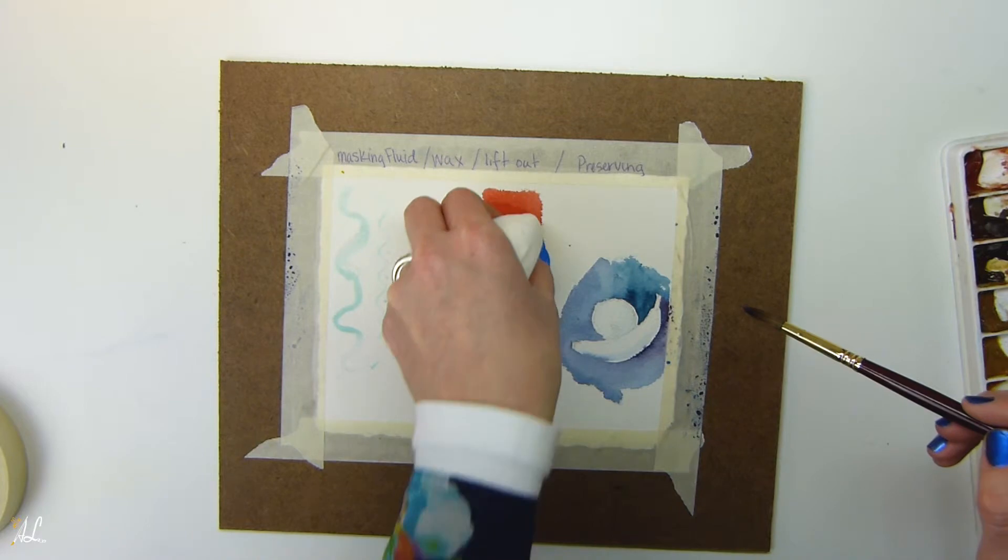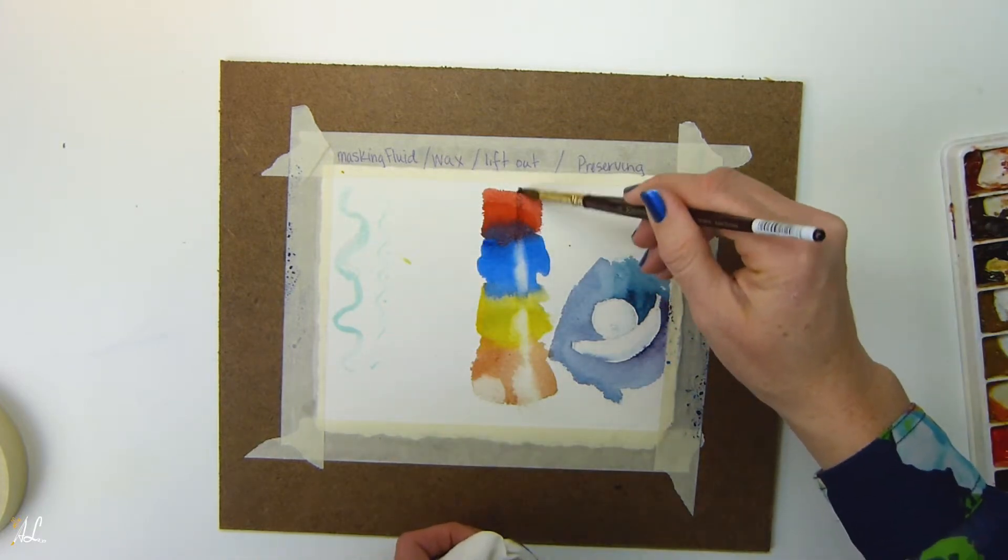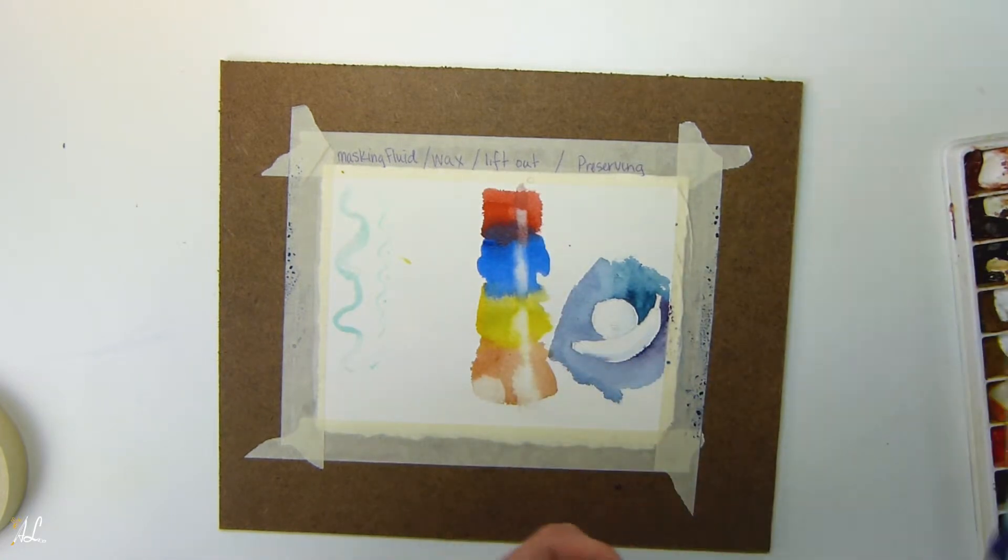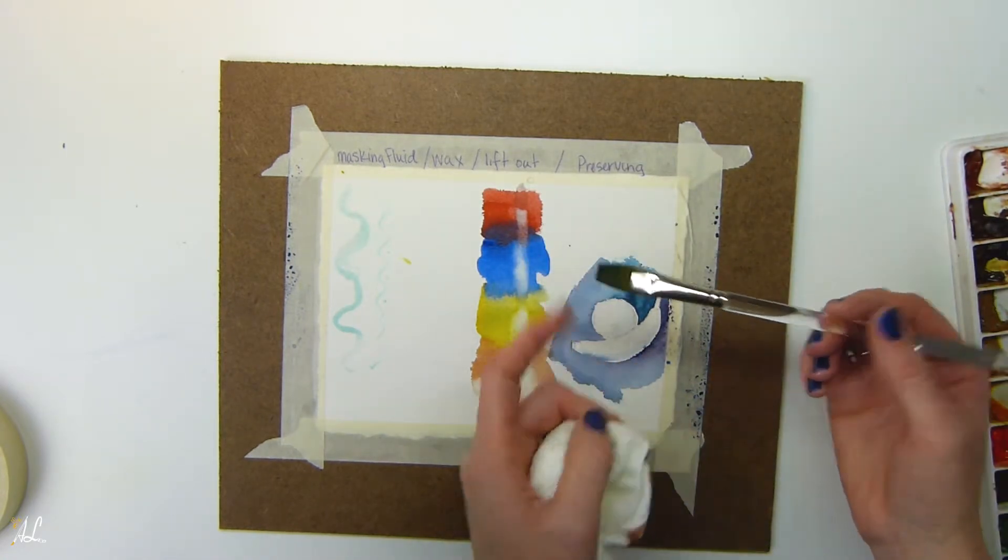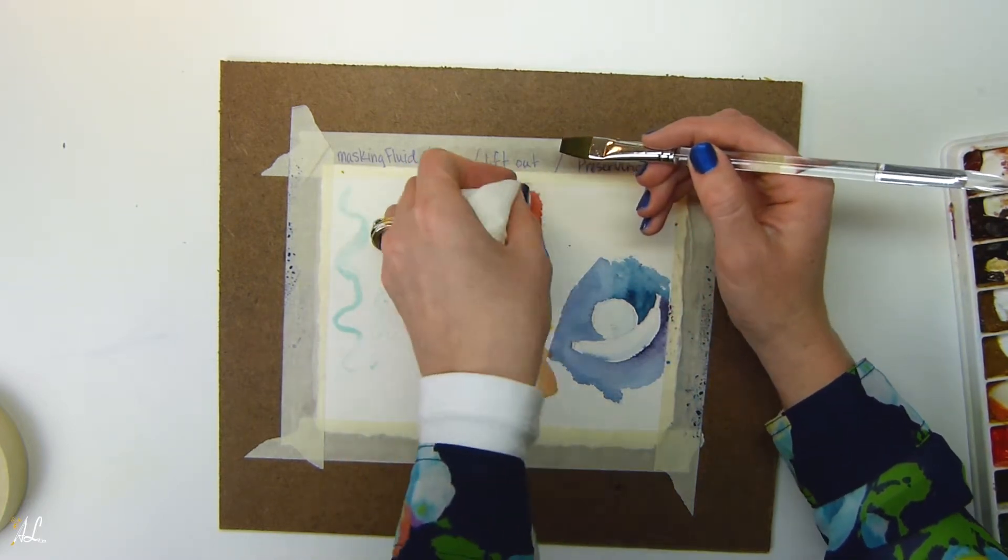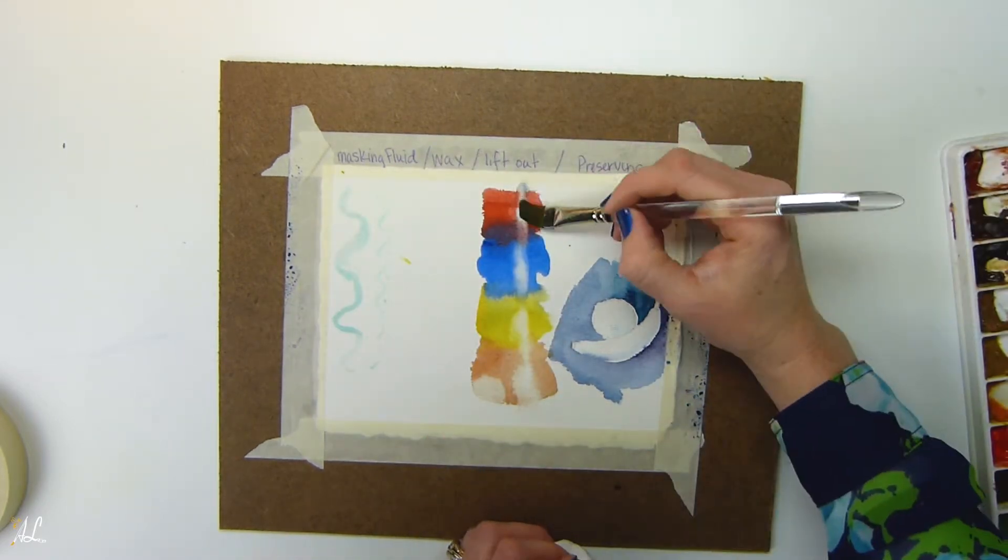I usually use my paper towel to kind of clean up any color that I might need to. You can also do this when your paint is dry you just have to scrub a lot harder. You can see how it picked up where it was still wet. If you want to pick up where it's dry I would use a nylon flat brush. Just scrub it. And then blot it out.